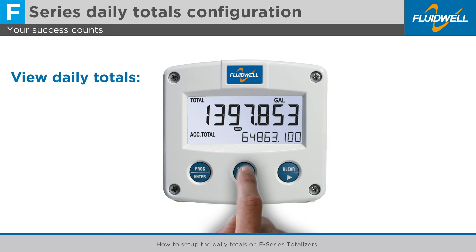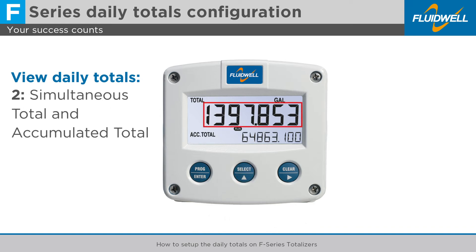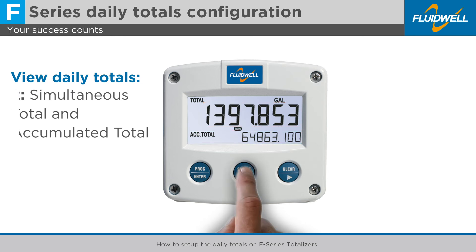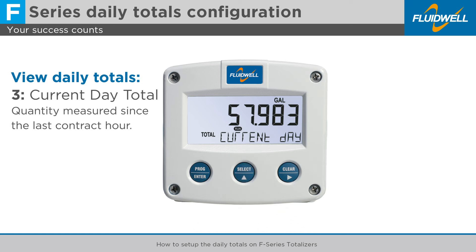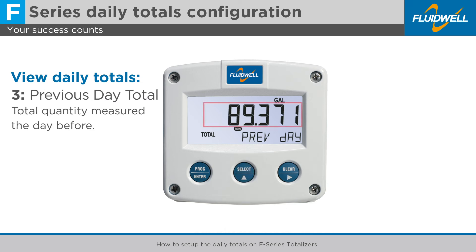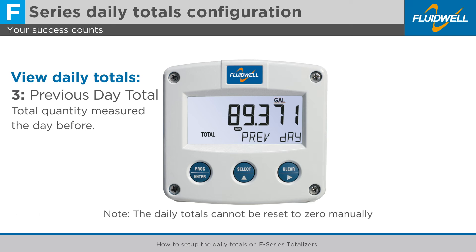Press select to display the next screen — it shows total and accumulated total simultaneously. Press select again to display the next screen. It shows the current day total, or daily total, which is the quantity measured since the last contract hour. Press select to display the next screen. It shows the previous day total, which is the total quantity measured the day before. They all share the same measuring unit for total at the top of the screen. Note that the daily totals cannot be reset to zero manually.